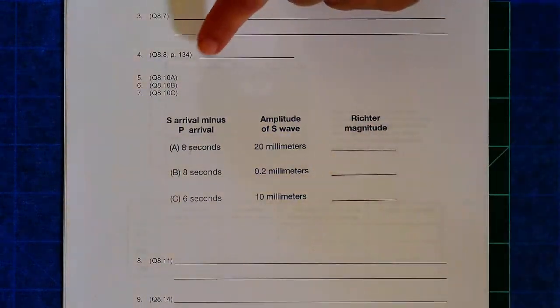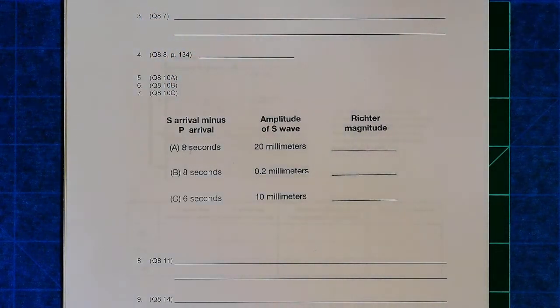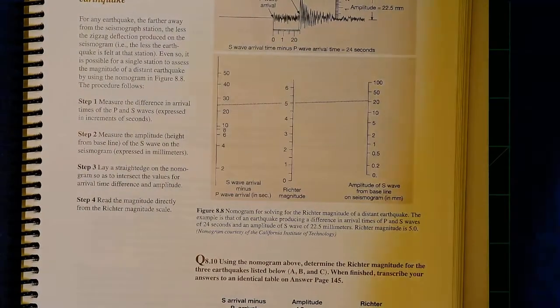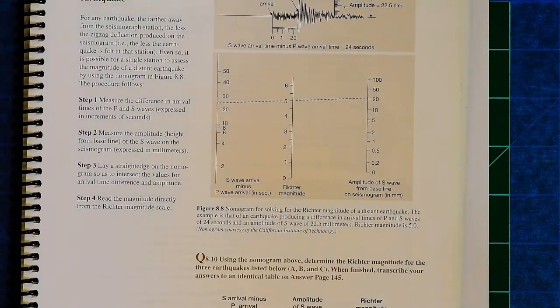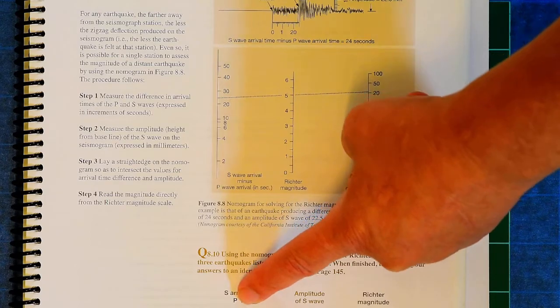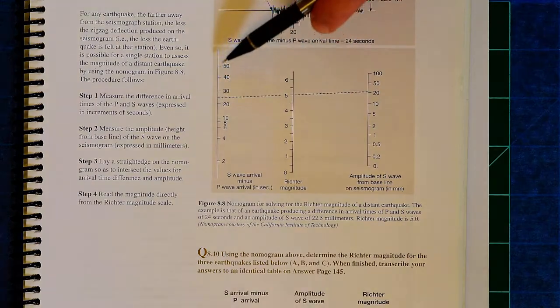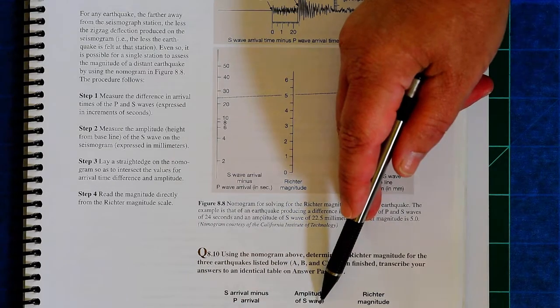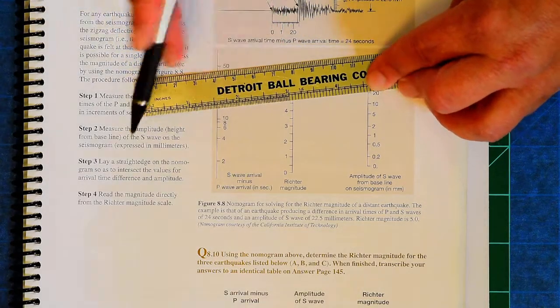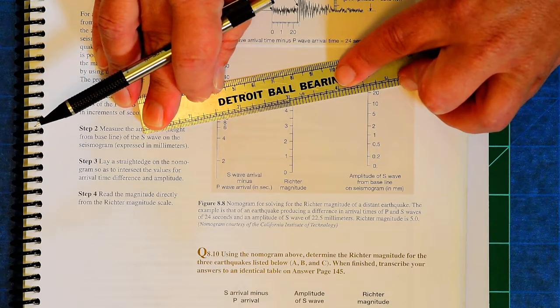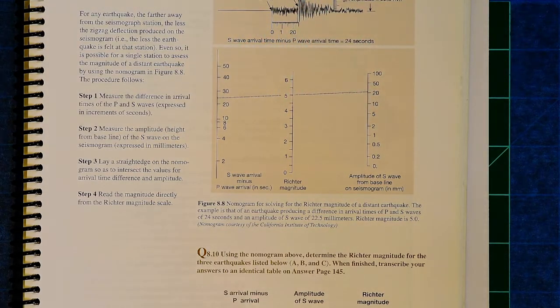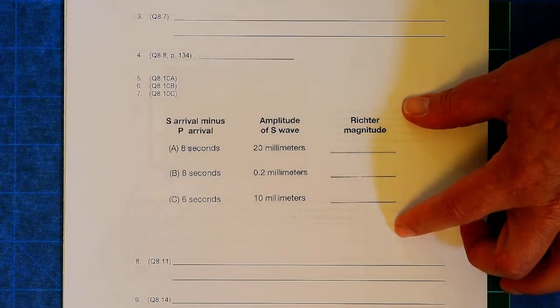Now, a few other things. Right down here I have questions 8.10 A, B, and C, and that is calculating the Richter magnitude of an earthquake. And you will do that using this nomograph, and it's very similar to what I showed you in the lecture. Where, for example, A says you have 8 seconds between the P wave and the S waves. That's what you read on this part of the graph, and 8 would be right there. You have 20 millimeters of amplitude, which is right there. So you will take a straight edge, line 8 up with 20, and wherever it crosses, that's what your Richter magnitude is. So just make sure that you use this graph for these three questions.